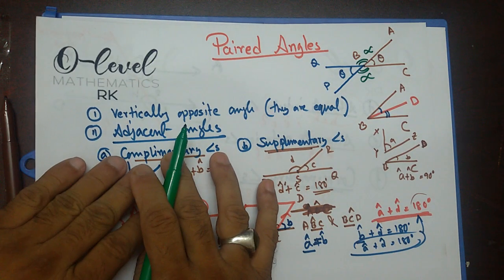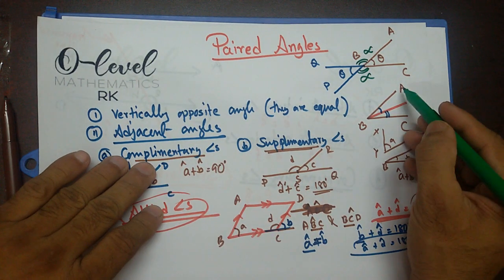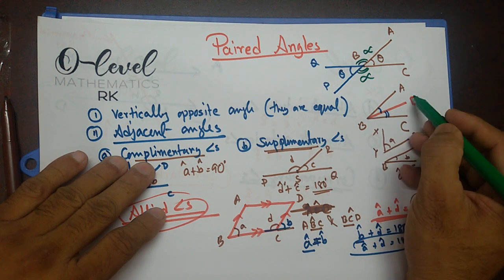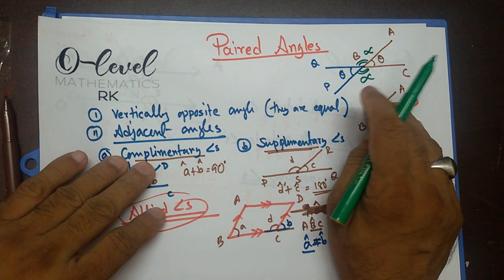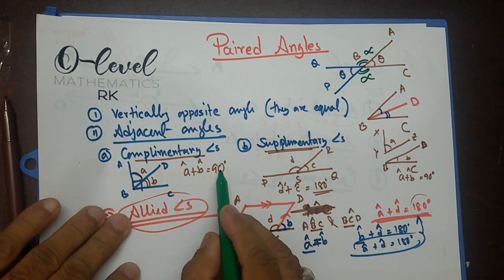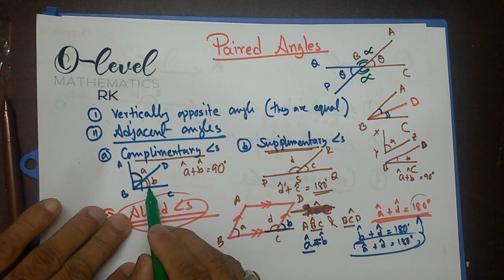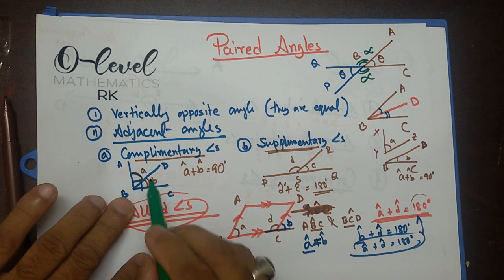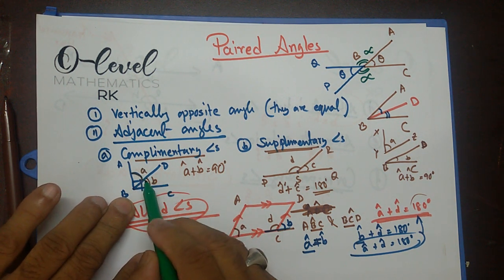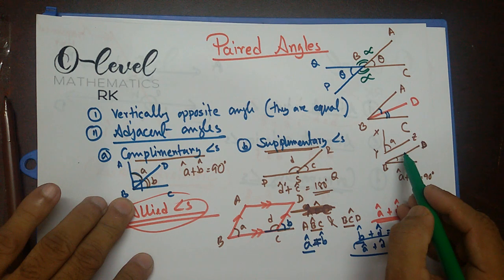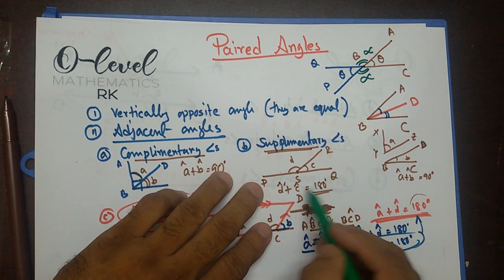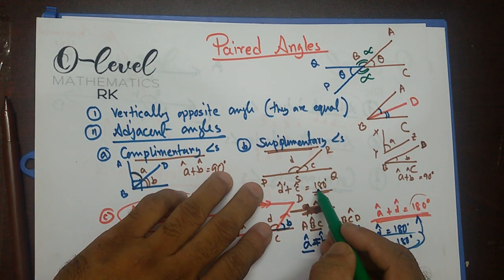Then we have adjacent angles: when two angles share a common vertex and a common side, we call them adjacent angles. Complementary angles: when the sum of two angles equals 90 degrees — they may or may not be adjacent. Supplementary angles: sum of two angles equals 180 degrees.